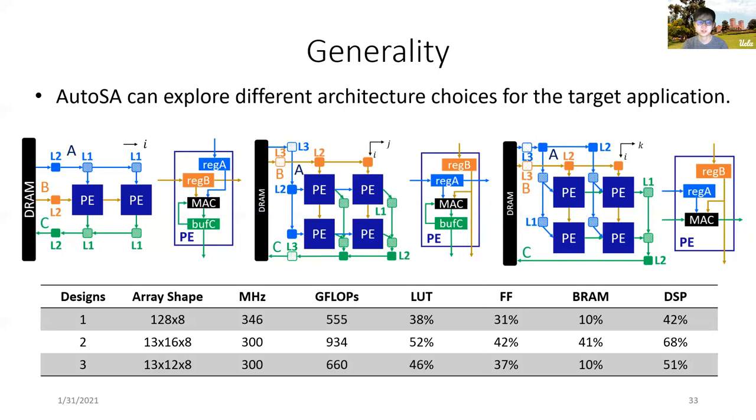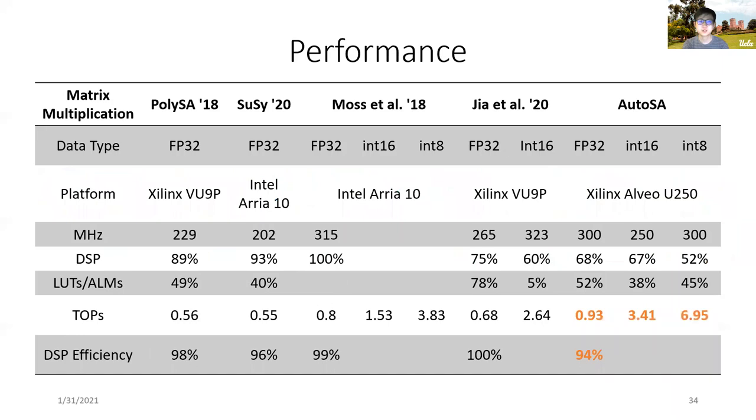As discussed earlier, these different architectures show different trade-offs and raise important research directions in the architectural community about finding the best data flow given a certain application. The general compilation capability of AutoSA has made this task possible and easier. We are expecting researchers to leverage AutoSA to perform more architectural studies in the future.